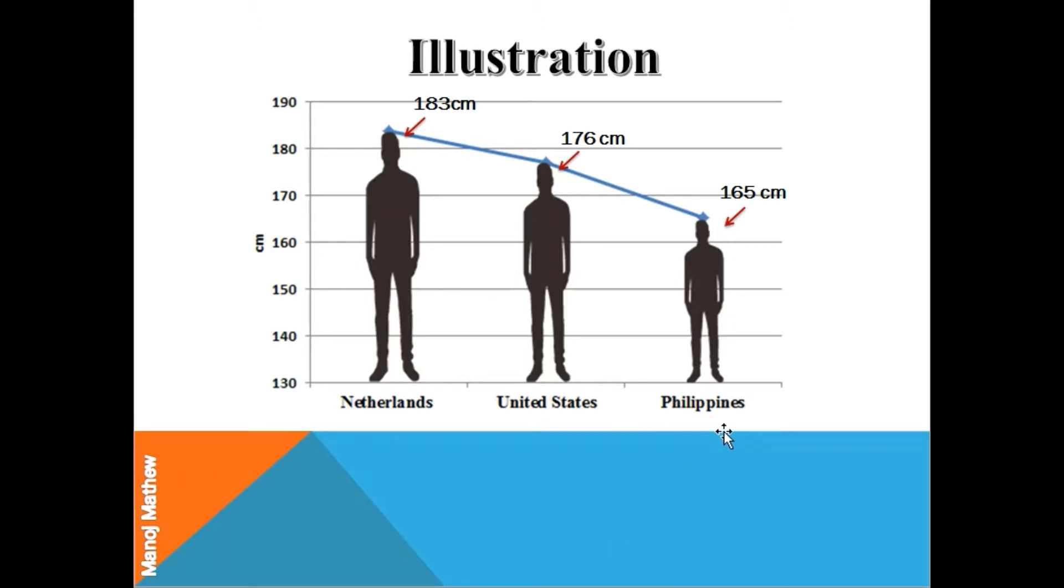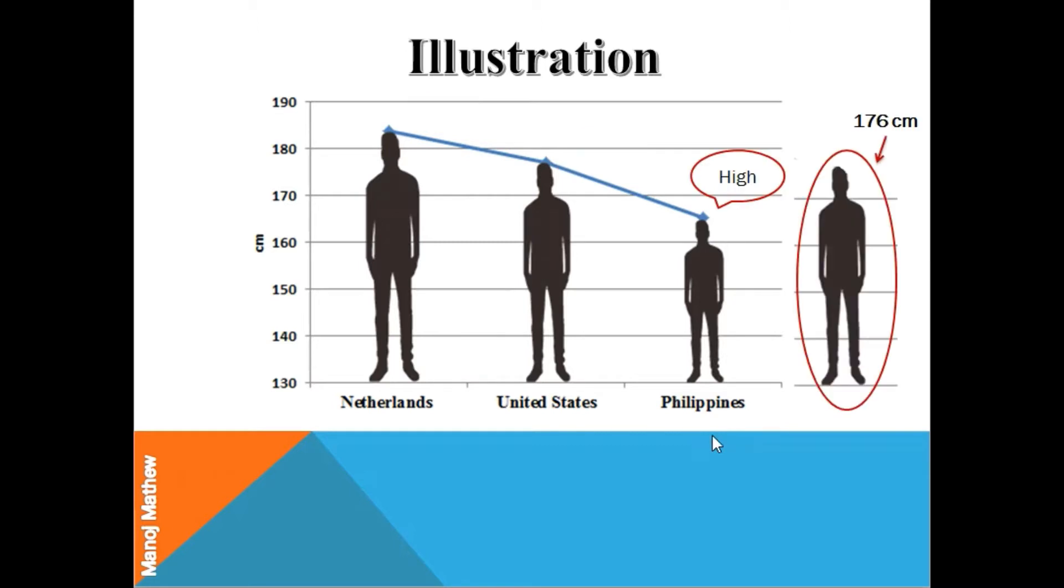Now, if I show a man having a height of 176 centimeters and ask a person from the Philippines about his height, they will say that the person is tall. Whereas a person from the United States will say that the man is average height, and a person from the Netherlands will say that the man is short. You can see that for the same height, different people have different perceptions and use different linguistic terms like short, average, and high.